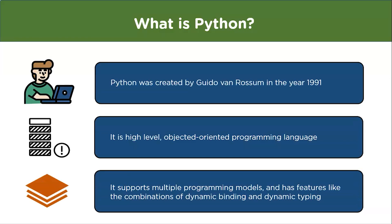Now let's understand what Python is. Python is a programming language introduced by Guido van Rossum in the year 1991. It was named after the TV show Monty Python's Flying Circus. Its version 2.0 introduced new features like garbage collection for memory management.